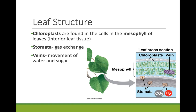Gas exchange is performed through specialized structures called stomata, found on the underside of the leaf. Stomata open and close based on water movement driven by osmotic balance — a mechanism discussed in Chapter 5. They must open and close because the plant needs to bring in carbon dioxide and release its waste product, oxygen.